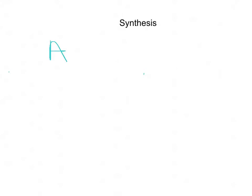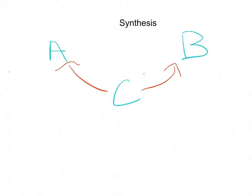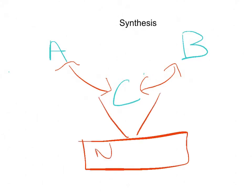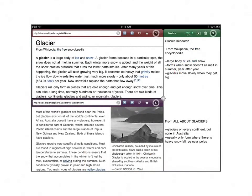The next thing to teach students is how to synthesize information. Students need to know how to take information from source A, take information from source B, combine it with source C — which could be their prior knowledge or opinions — and format a new idea. This is very tricky for students. Often, students look for just one source with all their information, or they end up using only the last source they find. One of my favorite apps to help is called Side by Side.